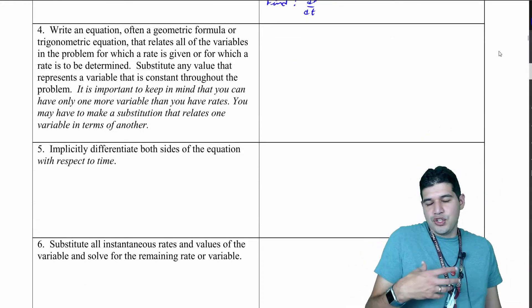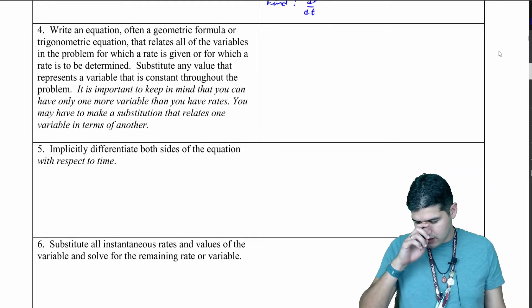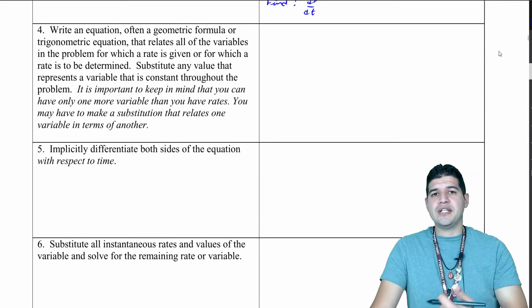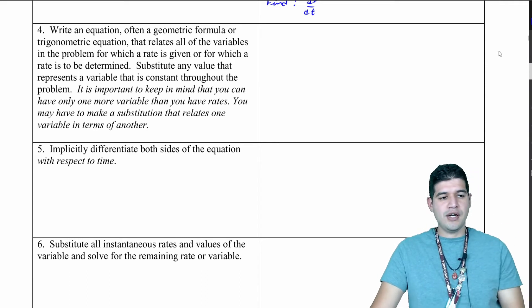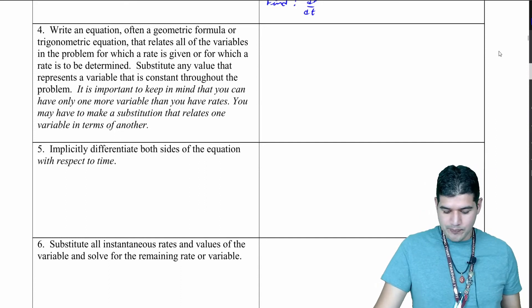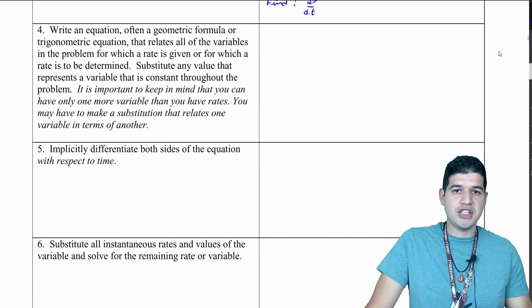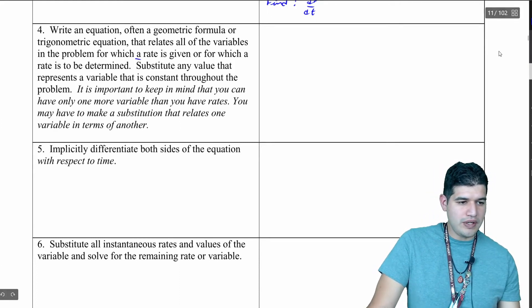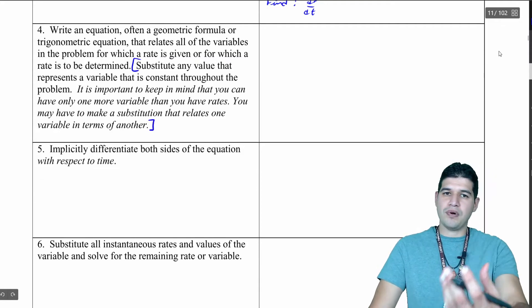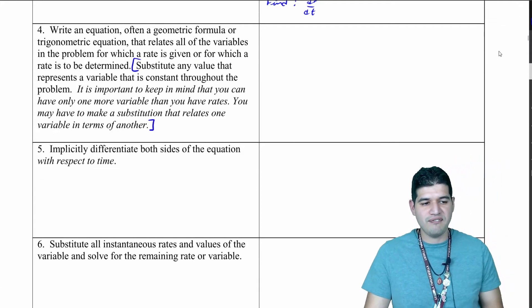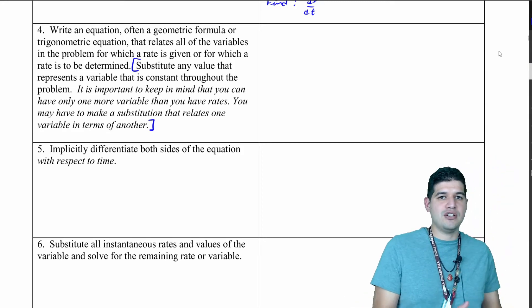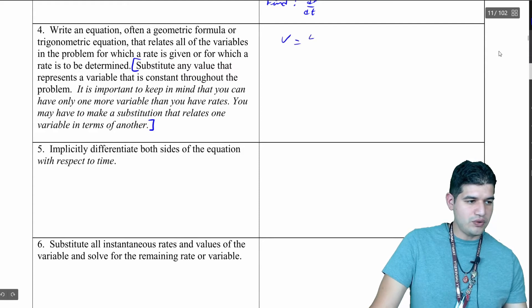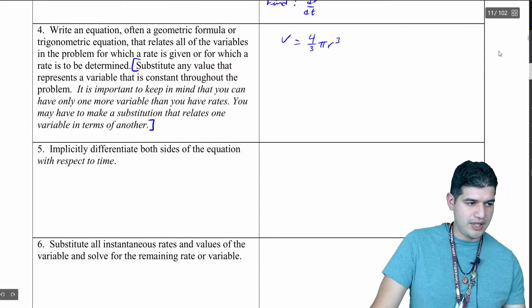Now write an equation, usually that's going to be a geometric formula. It said the volume of the sphere, so look in your textbook, look in your notes, and figure out what is the volume of a sphere. As I said before, that's normally going to be given to you, so you don't really need to memorize those. It's important that you can solve for one value in terms of another. V equals 4/3 pi r cubed. That's what we're looking at.